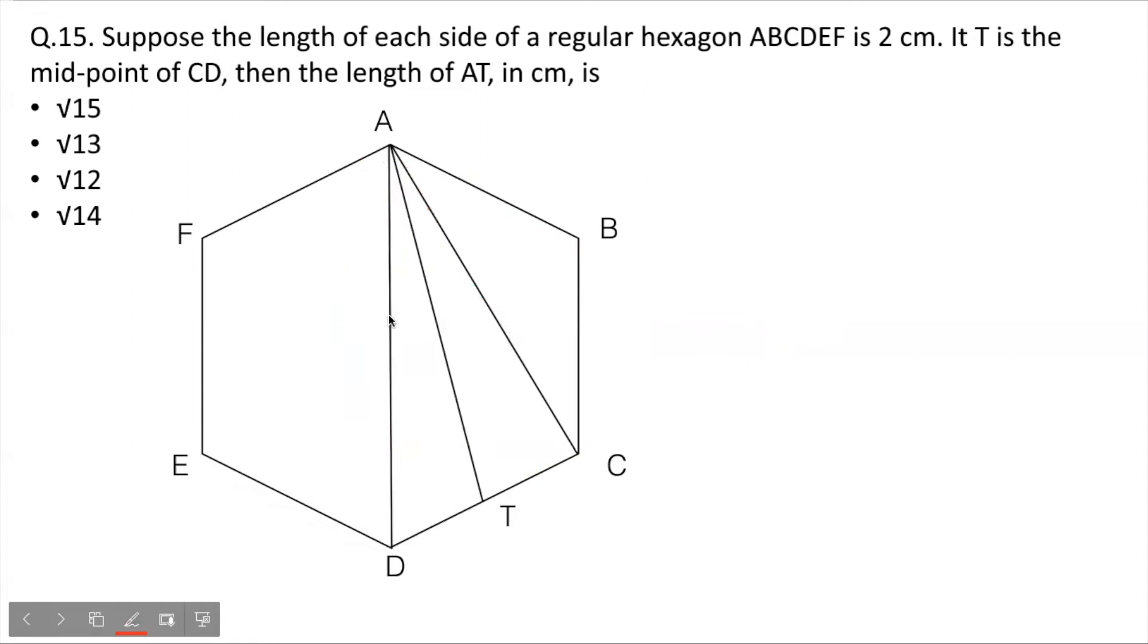Now it's very simple. We have found the length of all the sides that we needed. And now we just need to apply the Apollonius principle. AD square plus AC square equals twice of AT square plus twice of DT square.